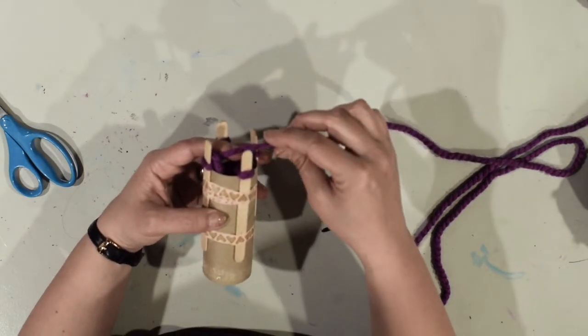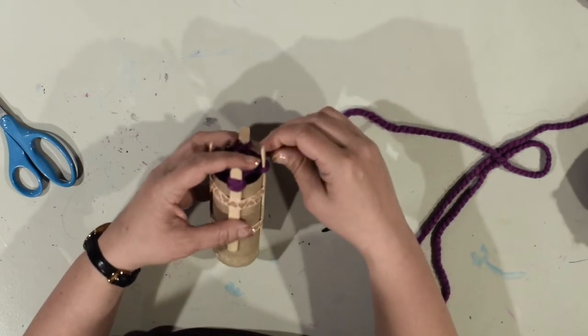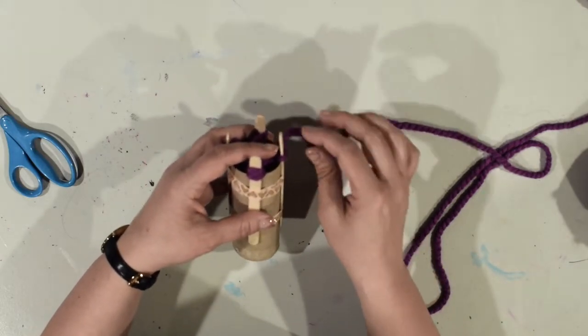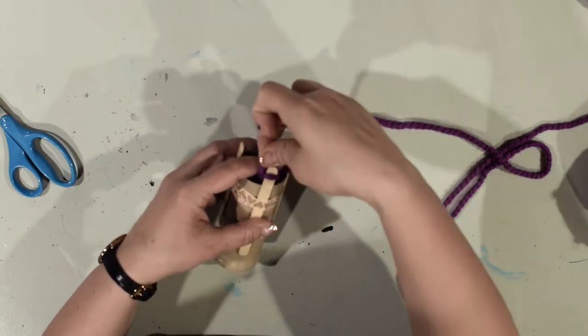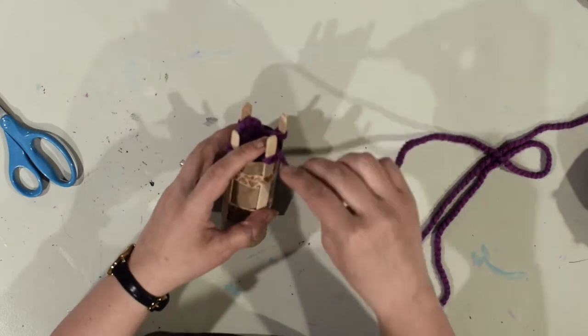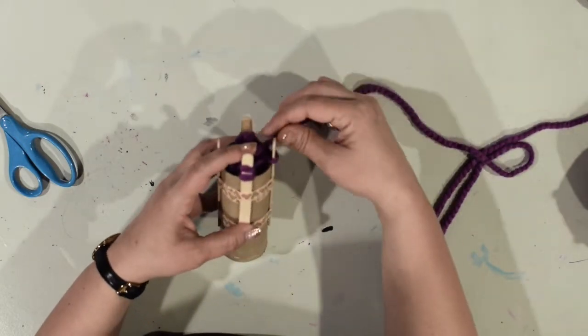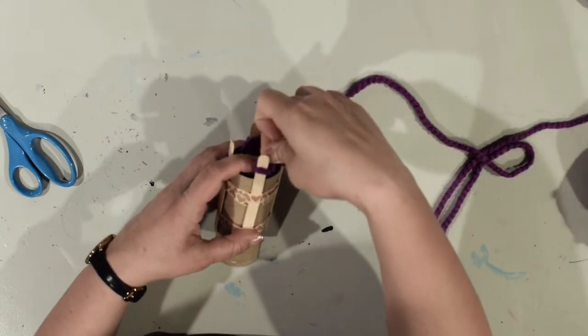So I'm going to take my yarn, wrap around from behind and come forward. Use my left hand to hold the yarn in place. I'm going to take my other hand, pinch, pull up around like that. Turn, and I'm going to do this again - wrap around from behind. I'm going to pinch the bottom, pull it up and over.